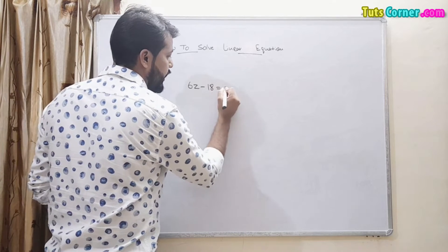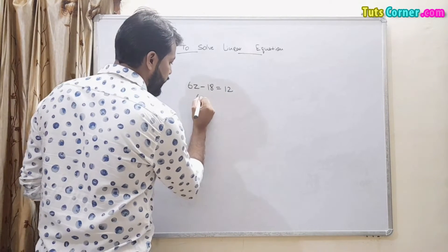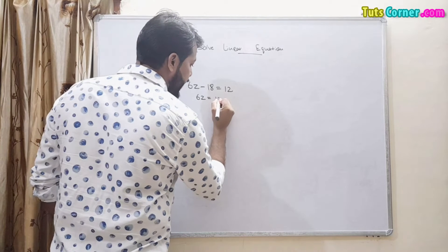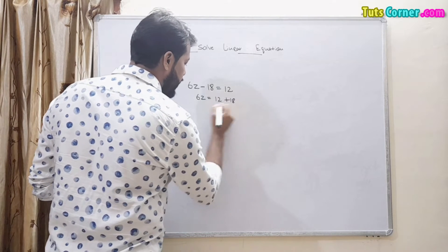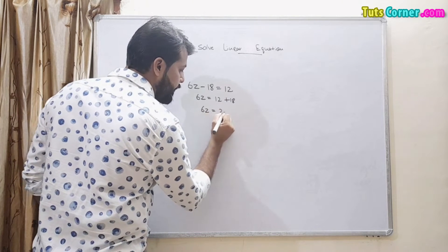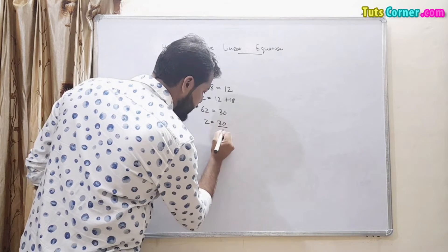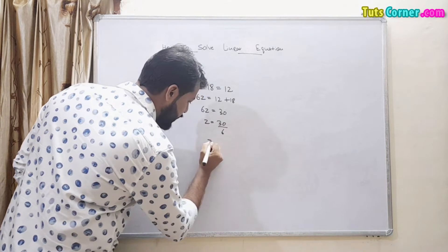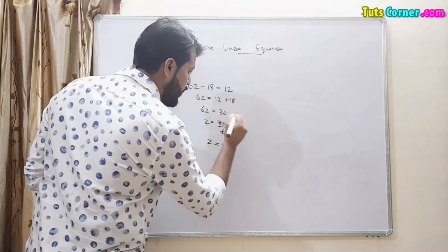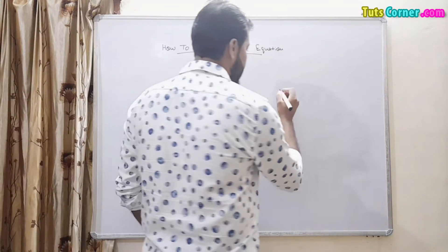For example, 6z minus 18 equals to 12. We move 18 to the right hand side, adding 12 we get 30. Now we divide 30 by 6 and get z equals to 5.